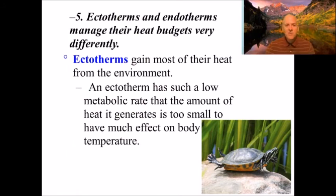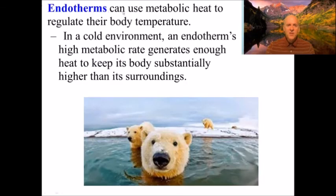Ectotherms manage their heat budgets very differently from endotherms. Cold-blooded organisms gain most of their heat from the environment; their metabolic rate is so low that internally generated heat has little effect on body temperature. Endotherms use metabolic heat to regulate body temperature — in a cold environment, an endotherm's high metabolic rate generates enough heat to keep its body substantially warmer than its surroundings. The polar bear has additional adaptations like a thick fat layer and specialized fur to prevent freezing in cold water.